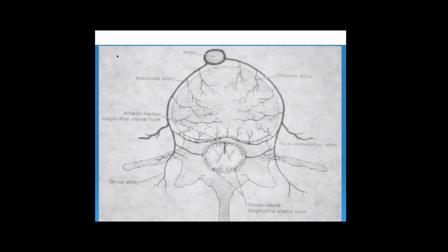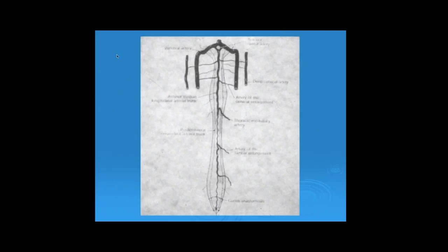And that supplies the anterior portion of the cord, basically two-thirds of the portion of the cord. The posterior columns are more often fed by the posterolateral spinal arteries, which have a segmental distribution, typically more like a web of vessels that connect up and down, right to left, but don't typically form a long, continuous chain like the anterospinal artery.